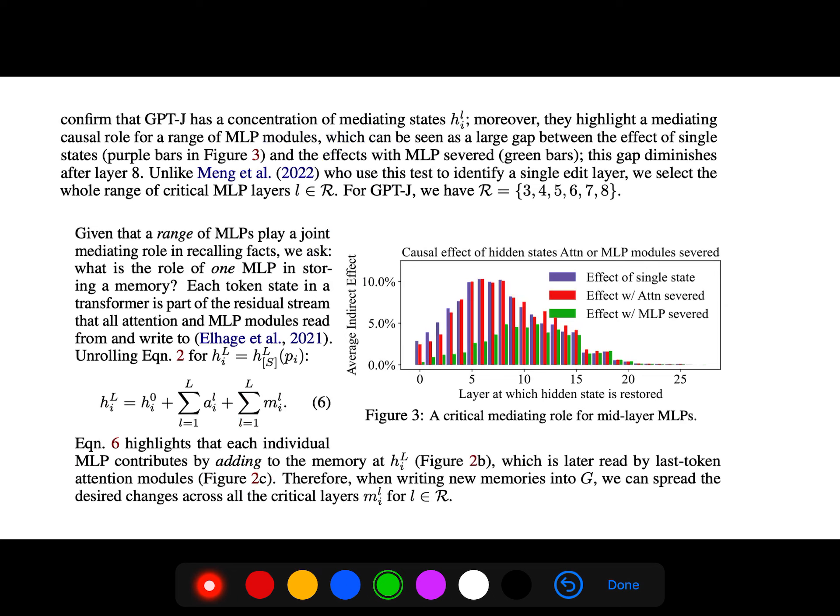Given a range of MLPs play a joint mediating role in recalling facts, we ask what is the role of one MLP in storing a memory? Which token states in a transformer is part of residual stream that all attention and MLP modules read from and write to? If you unroll equation 2, you get this one. Therefore, when writing new memories, we can spread the desired changes across all critical layers.